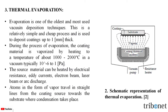Thermal evaporation. Evaporation is one of the oldest and most used vacuum deposition techniques. It is a relatively simple and cheap process, used to deposit coatings up to 1 mm thick. During evaporation, the coating material is vaporized by heating to a temperature of about 1000 to 2000 degrees Celsius in a vacuum — typically 10⁻⁶ to 1 pascals. The source material can be heated by electrical resistance, AC currents, electron beam, laser beam, or arc discharge.